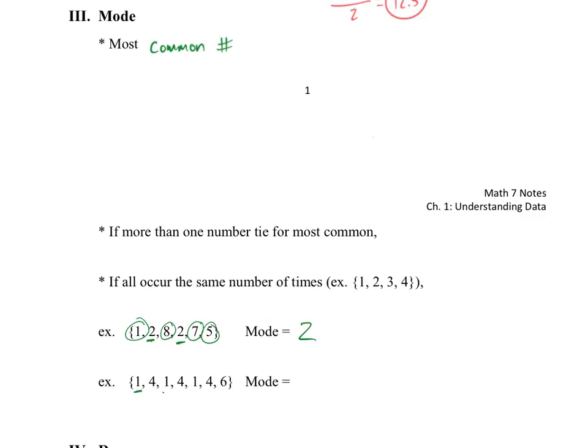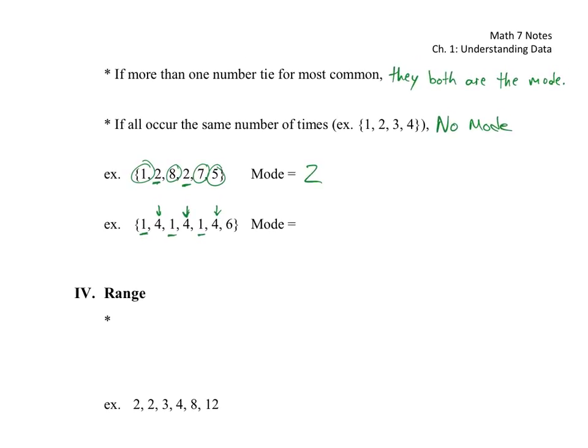In this next one, though, I have three ones, and I have three fours, and I only have one six. So that's this top kind of bullet point here. If more than one number ties for the most common, what do you think? Should the mode be one, should the mode be four, or should it be both? Both. So if more than one number ties for the most common, they both are the mode. But if they all occur the same number of times, so if I have this group one, two, three, four, it doesn't really make sense to say they're all the mode, right? So then there's no mode. So in our example there then, the mode is one and four.